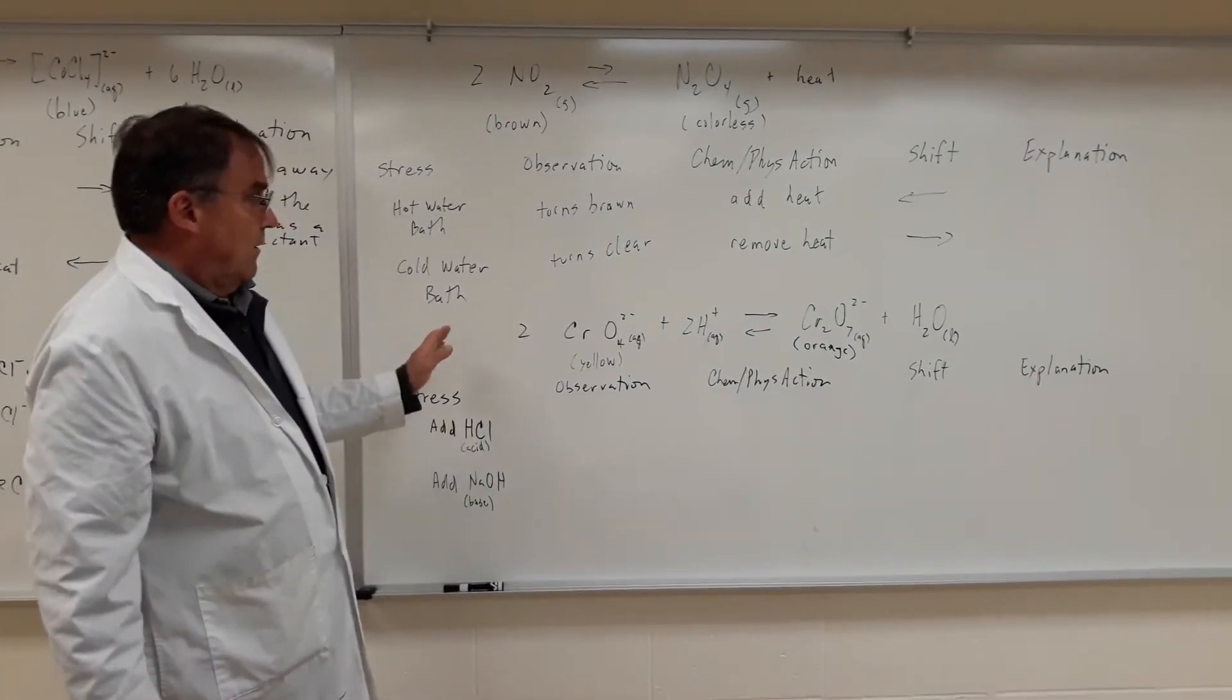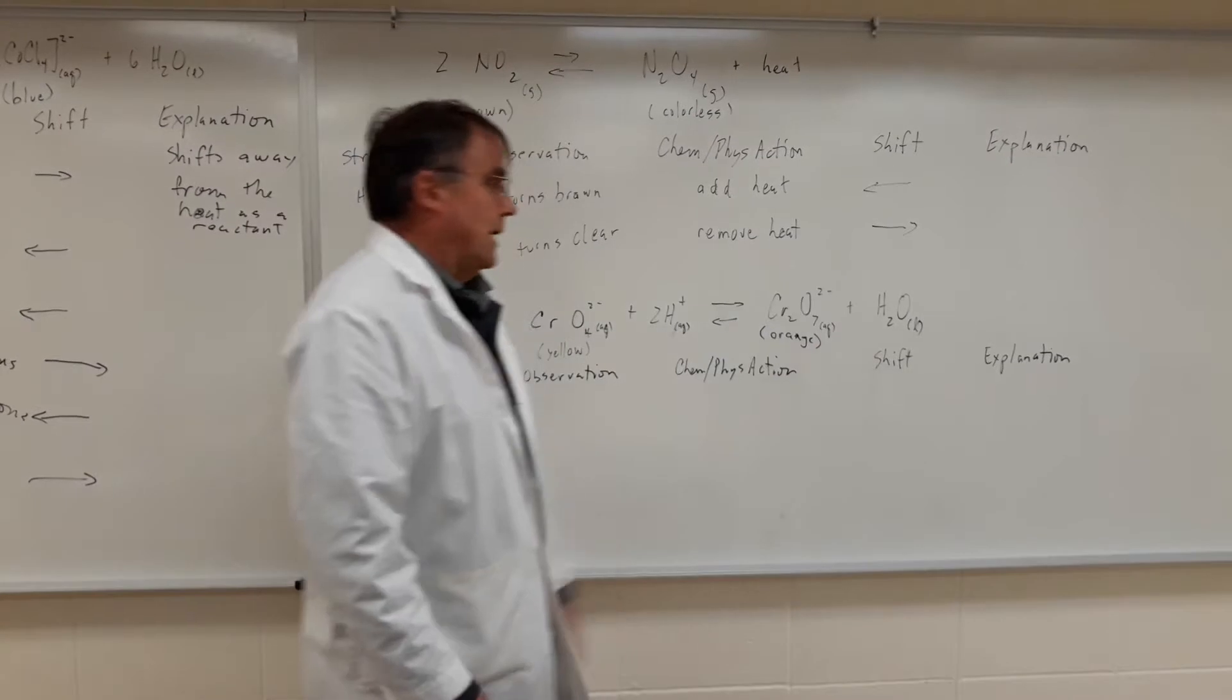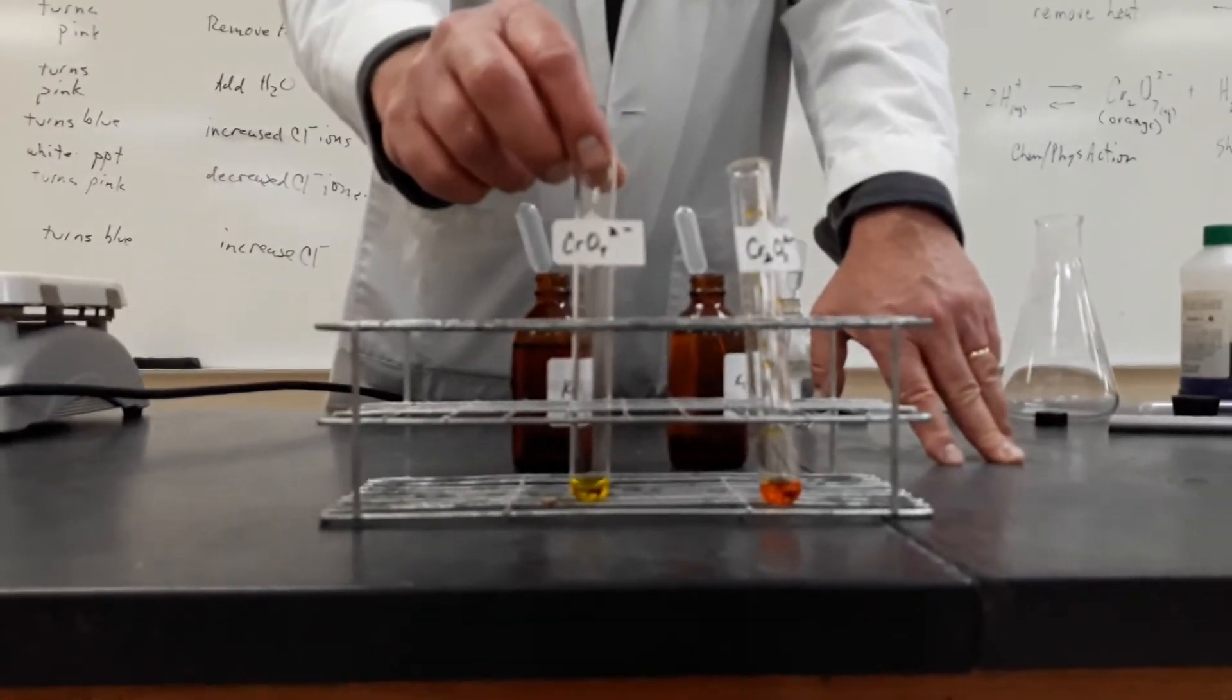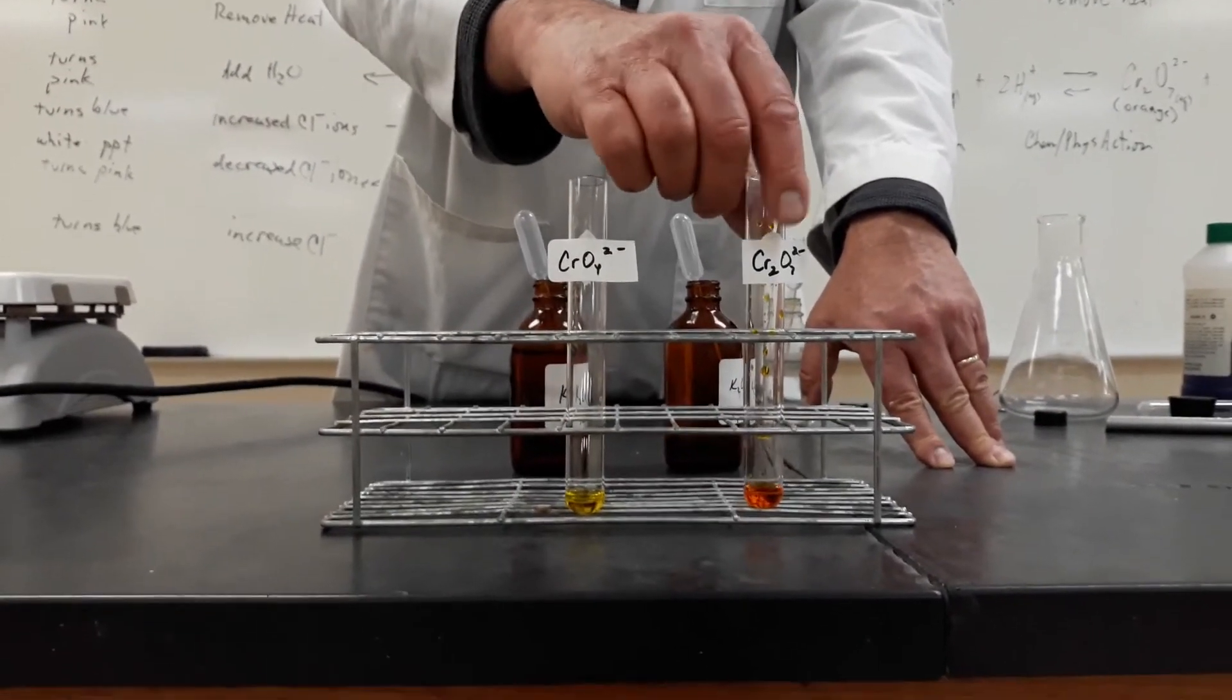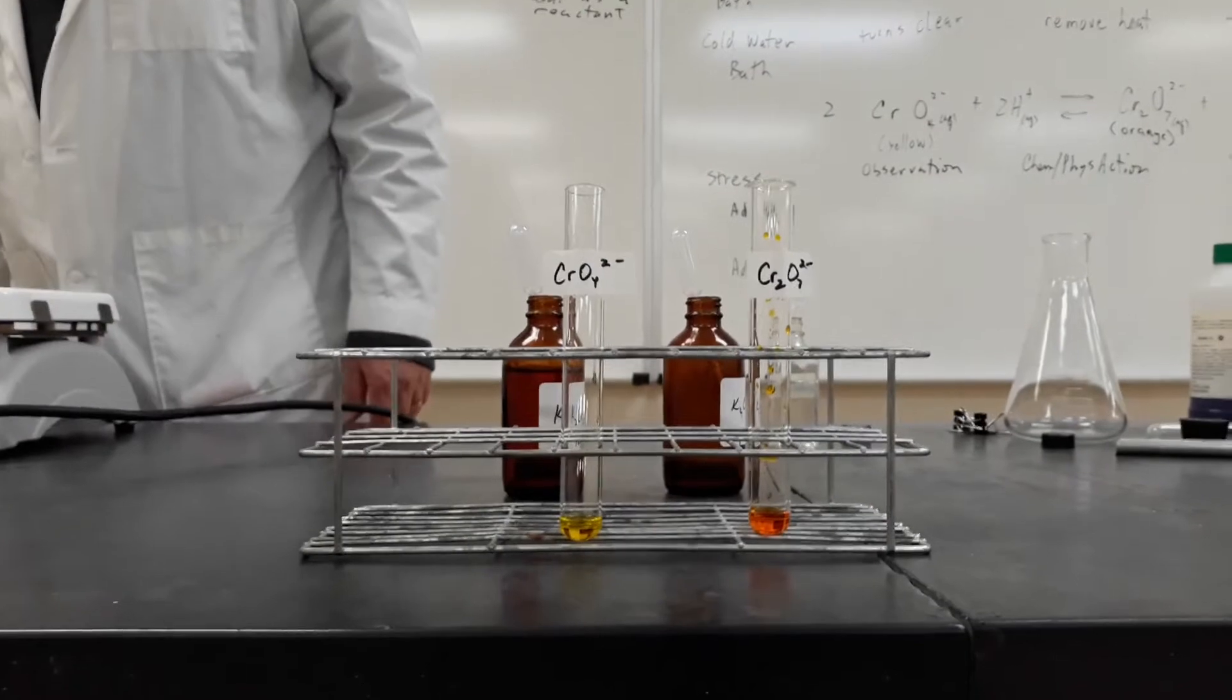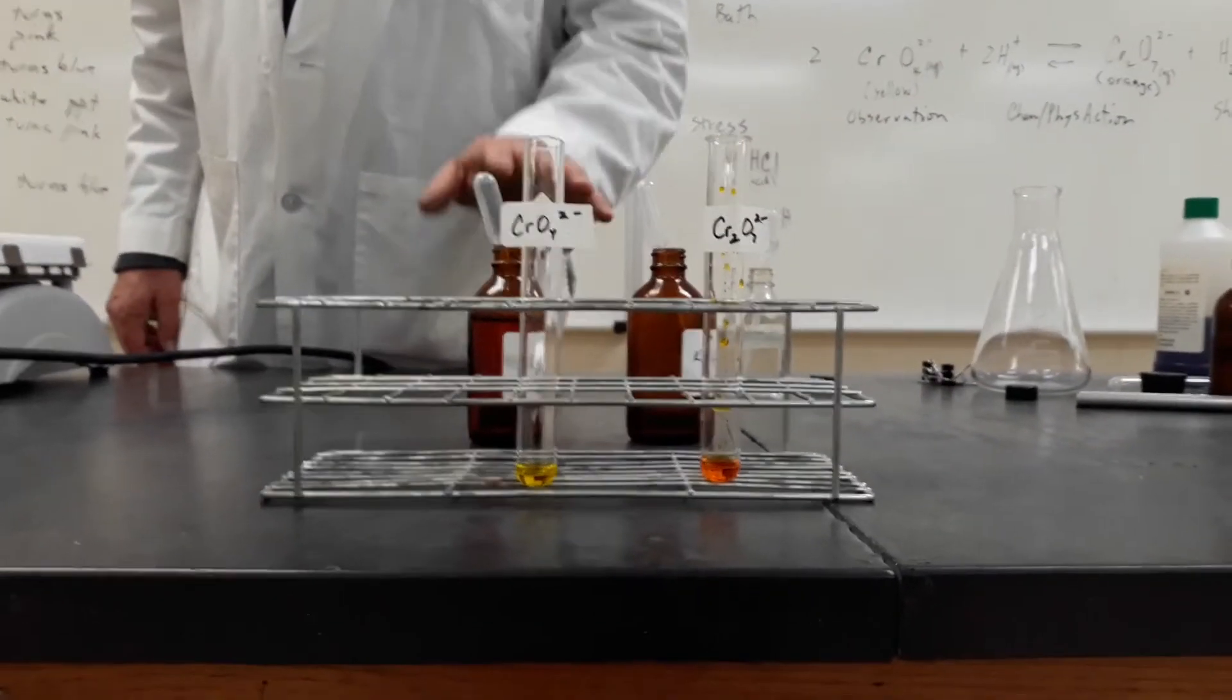And then they're at equilibrium with hydrogen ion on this side and water on this side. So here are two solutions, one with the chromate ion and one with the dichromate ion. And if we add H2SO4 to the yellow side rather, we'll see what happens.